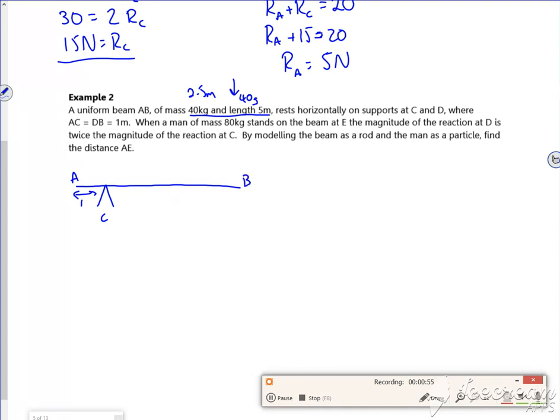there's B and D is 1m in as well. I've got the 40kg, the 40g acting down and I've got a normal reaction at C and a normal reaction at D.